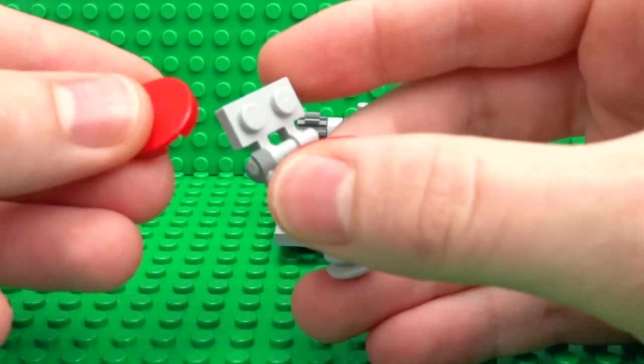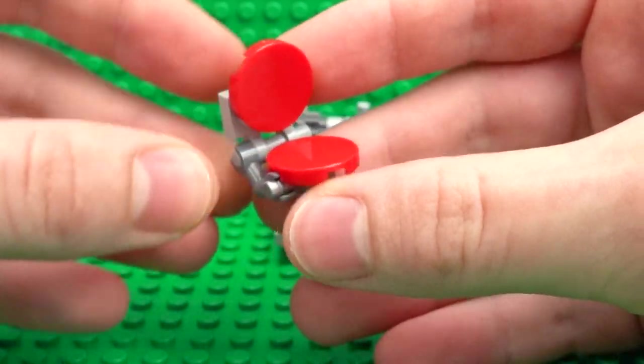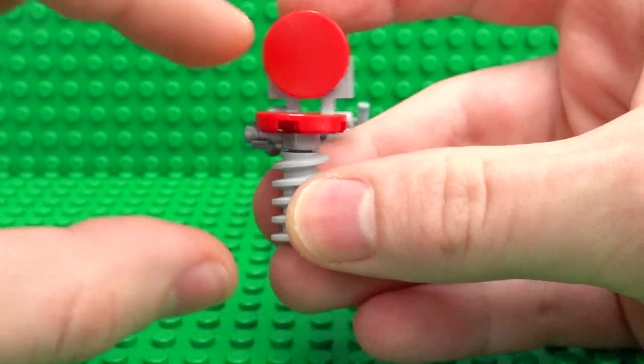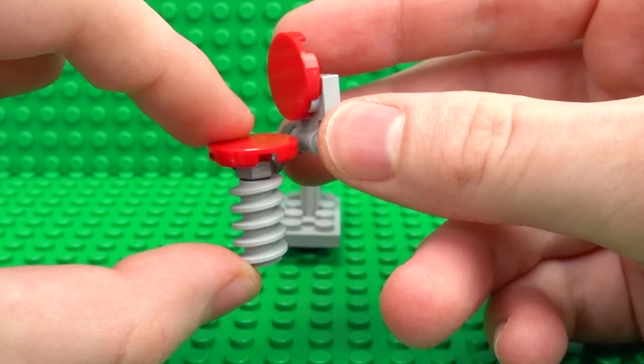And a 2x2 round tile. And that forms the adjustable backrest complete with the stand and the legs for the chair.